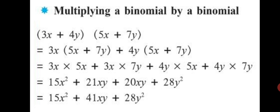Next is multiplying a binomial by a binomial. Look at the example: 3x plus 4y in bracket, multiplied by 5x plus 7y. There is no multiplication sign between the brackets, but the brackets themselves tell us it is to be multiplied — when there is no sign, multiplication is understood. Our first step is to take out the first term 3x from the bracket and write the next expression 5x plus 7y next to it, then take out plus 4y and write it with 5x plus 7y in bracket again.